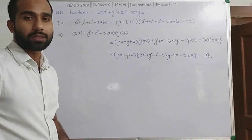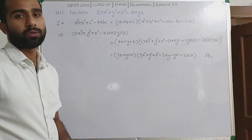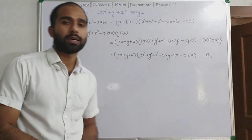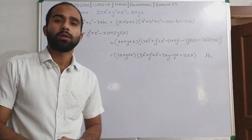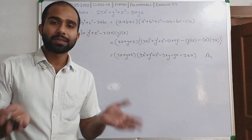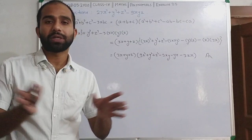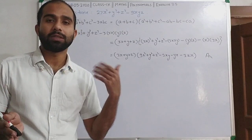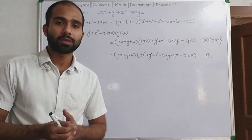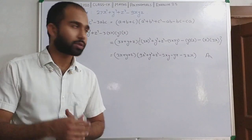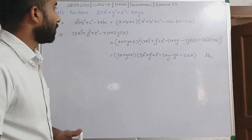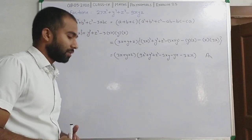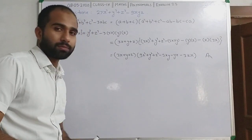तो यह identity based question काफी आसान है. बस इसमें दो ही काम करने हैं: या तो expand करना है, या factorize करना है. Factorize में हम identity को reverse use कर रहे हैं. इस तरीके से आप आसानी से कर सकते हैं.